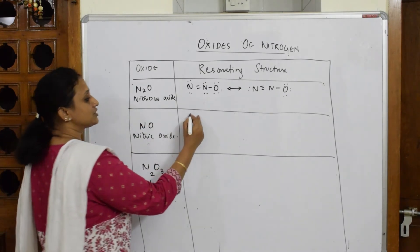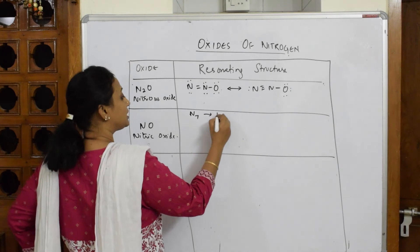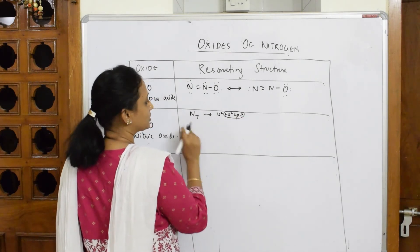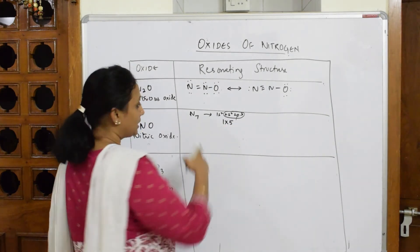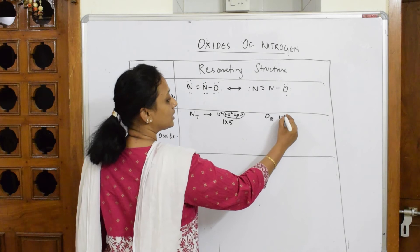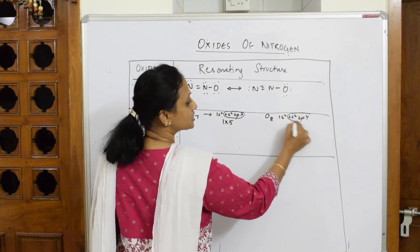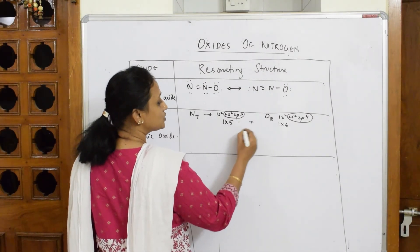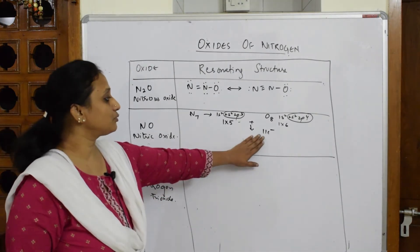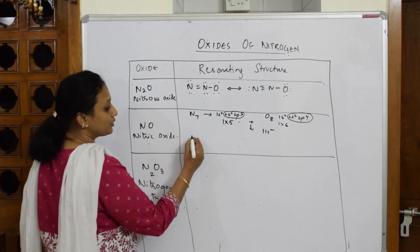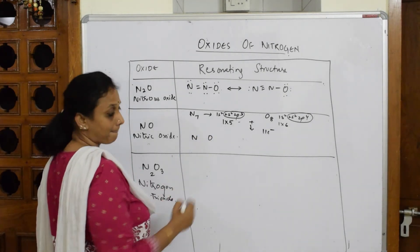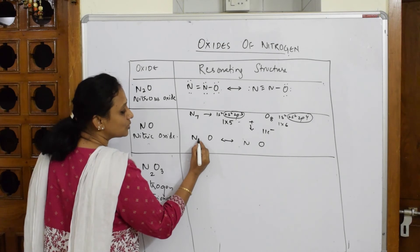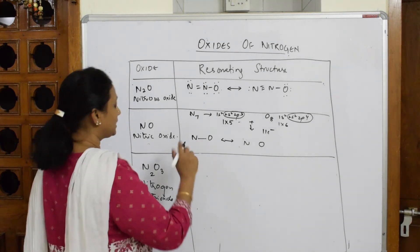For nitric oxide, NO: nitrogen has atomic number 7 — configuration 1s² 2s² 2p³ — giving 5 valence electrons. Oxygen has atomic number 8 — configuration 1s² 2s² 2p⁴ — giving 6 valence electrons. One nitrogen and one oxygen together give a total of 11 electrons. I'm going to place these 11 electrons between nitrogen and oxygen and draw a resonating structure.